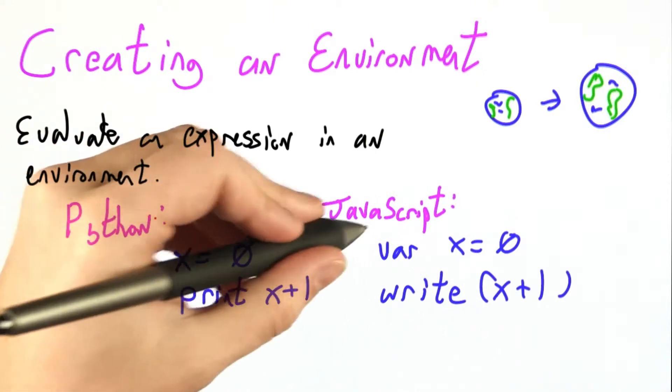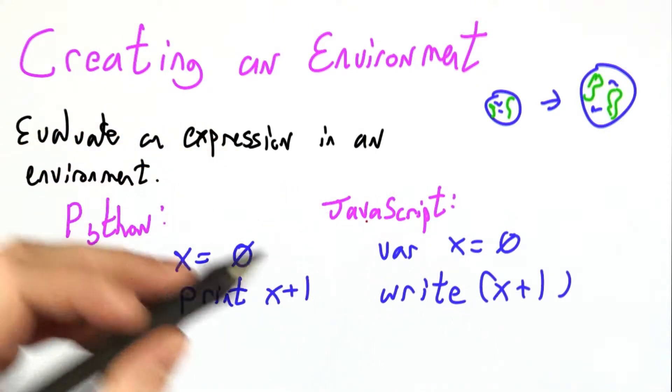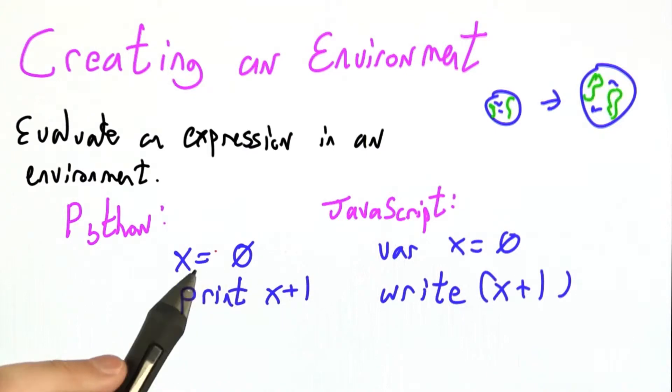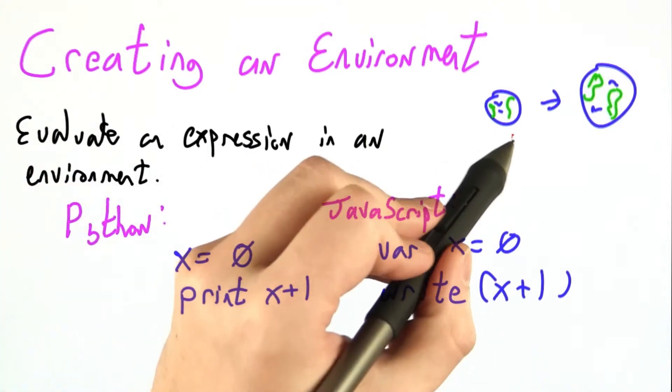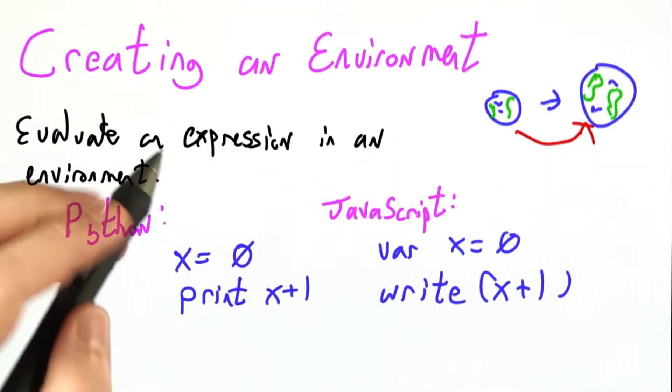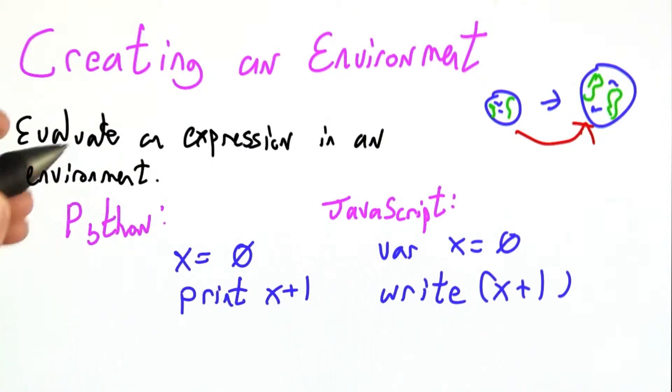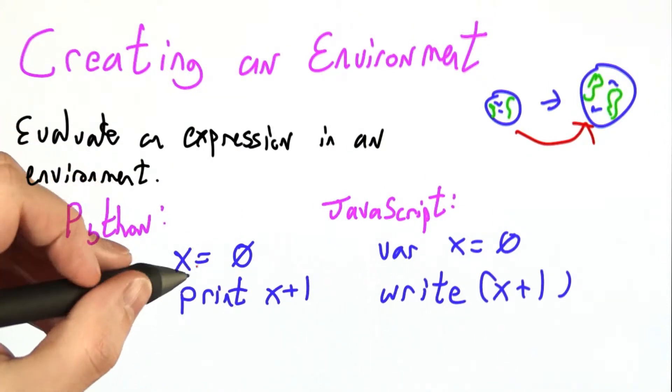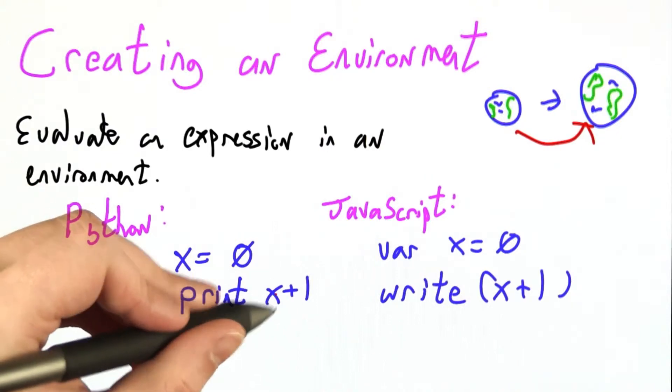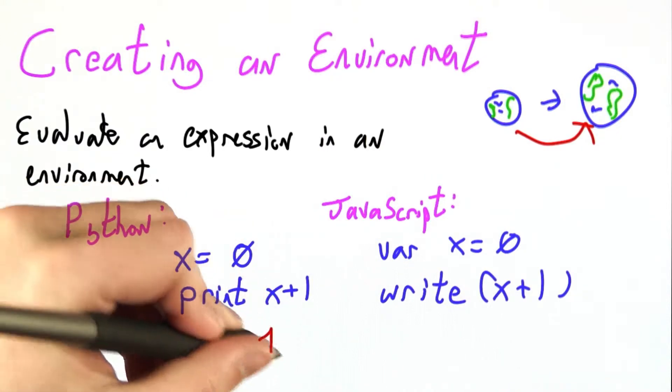Here I've written two code snippets, one in Python and one in JavaScript, that do the same thing, and both of them extend or create an environment. They make a bigger, richer world that has new bindings of values to variables. Here in Python, we assign the value 0 to the variable x, and then we're going to print out x plus 1. That'll be 1.